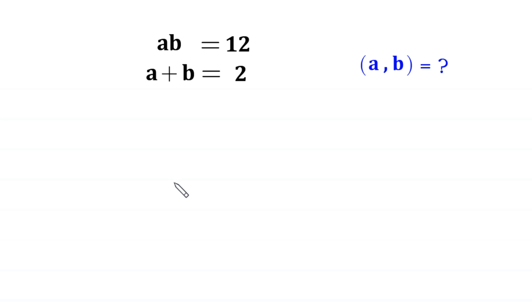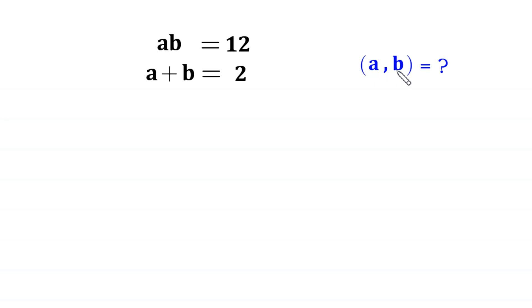Hello everyone, you are welcome to how to solve this very nice system of equations. ab is equal to 12 and a plus b is equal to 2. We need to find all possible values of a and b.